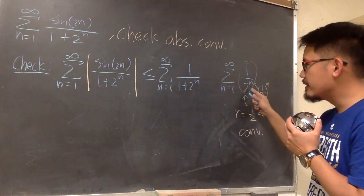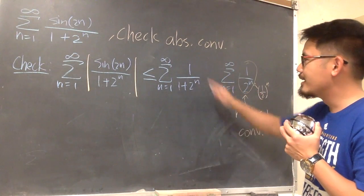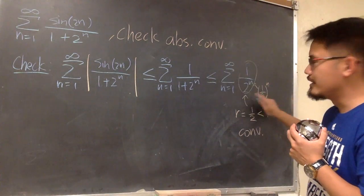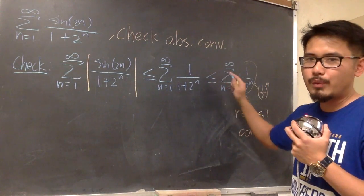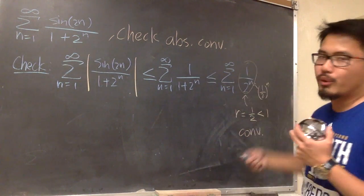Look at this. Originally, this part here, this is bigger than that denominator. But when you have the 1 over this, it's going to be smaller than this one. So let me just put down less than or equal to. The bigger the denominator, the smaller the reciprocal is.